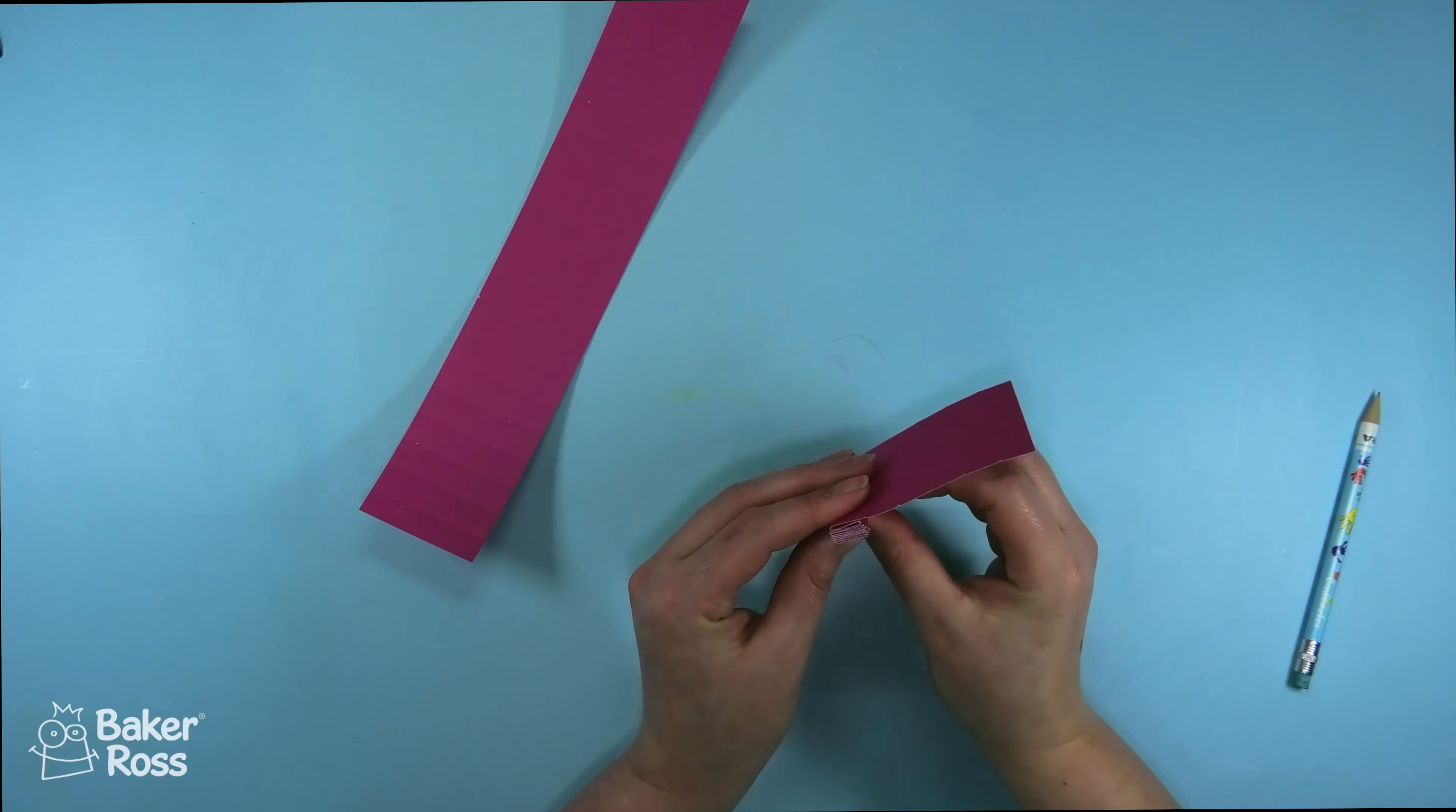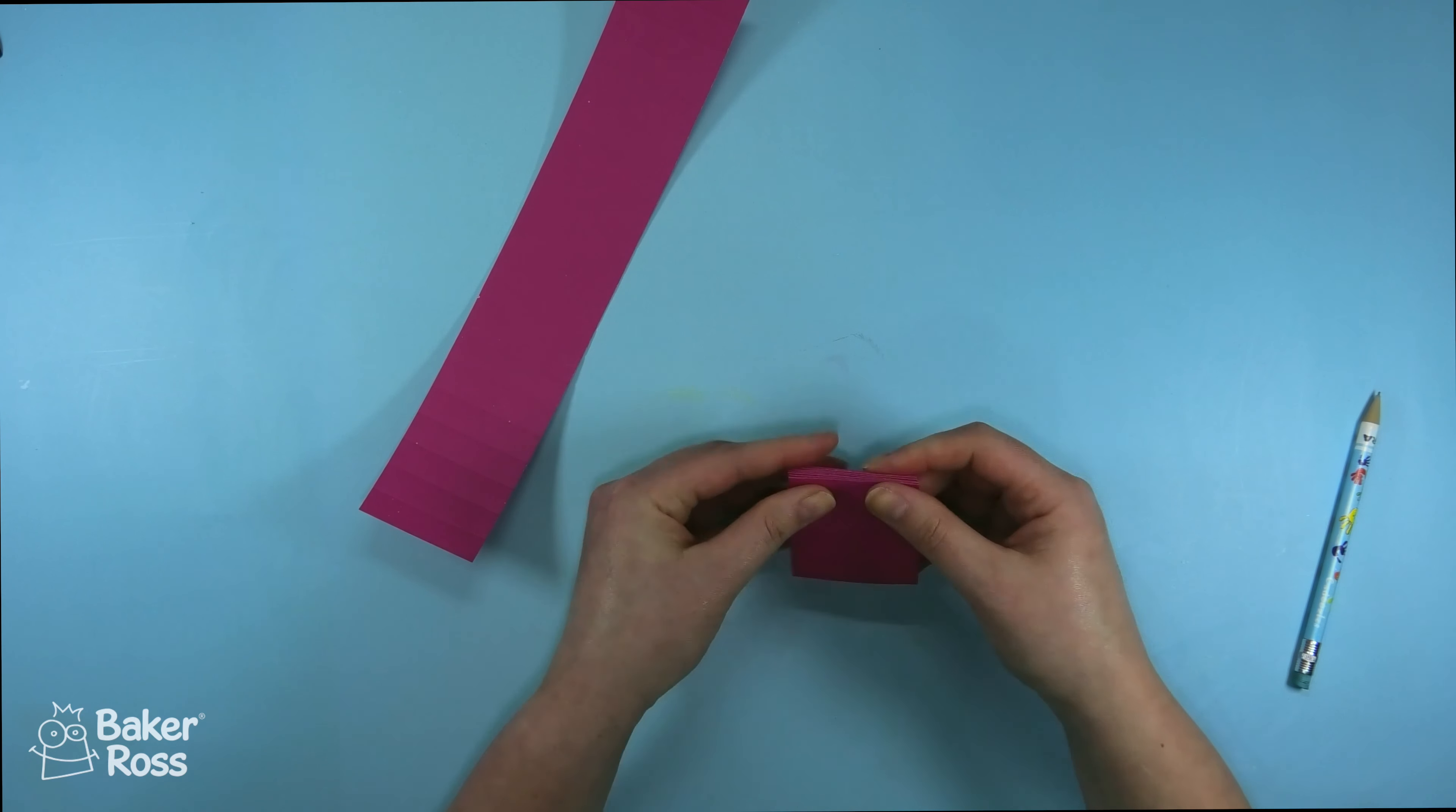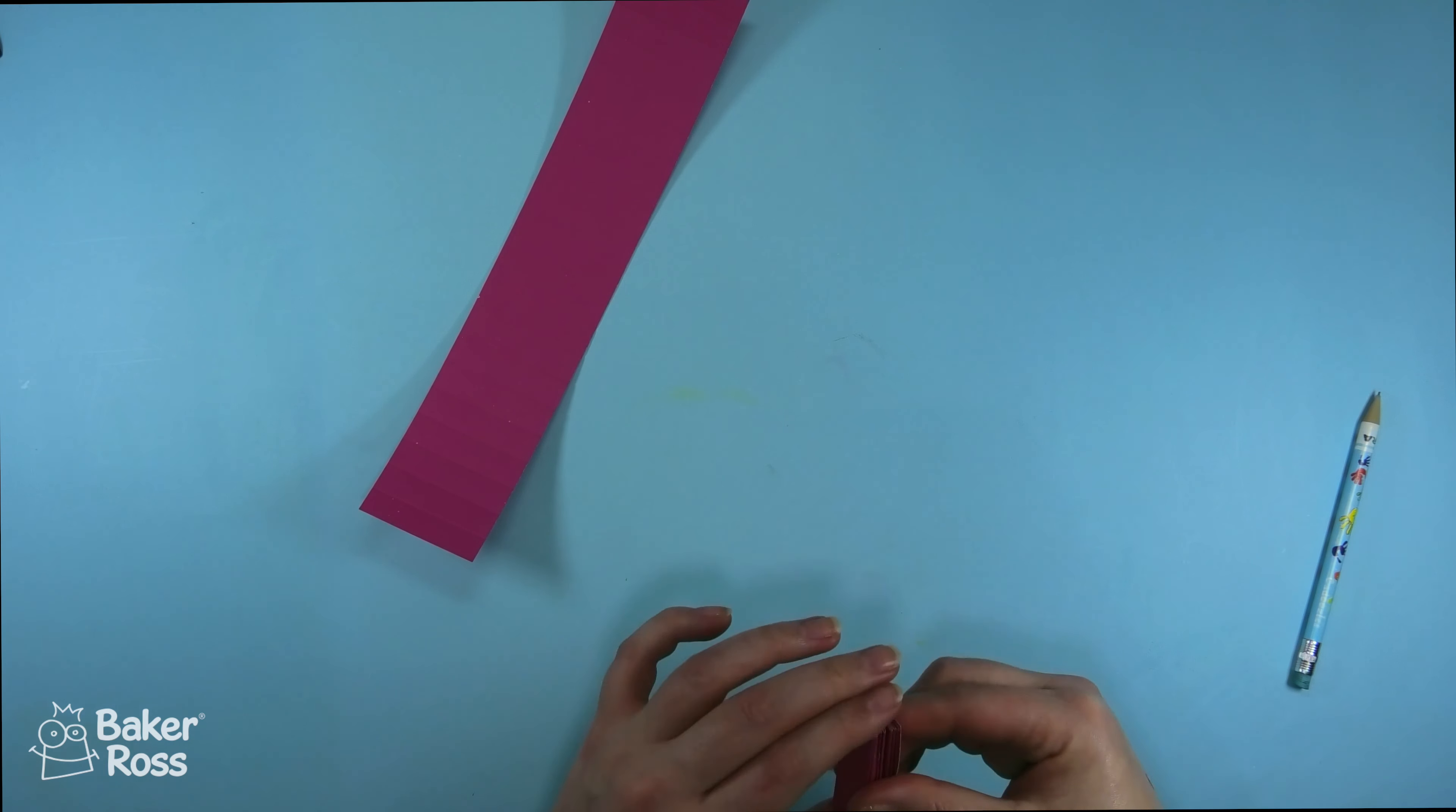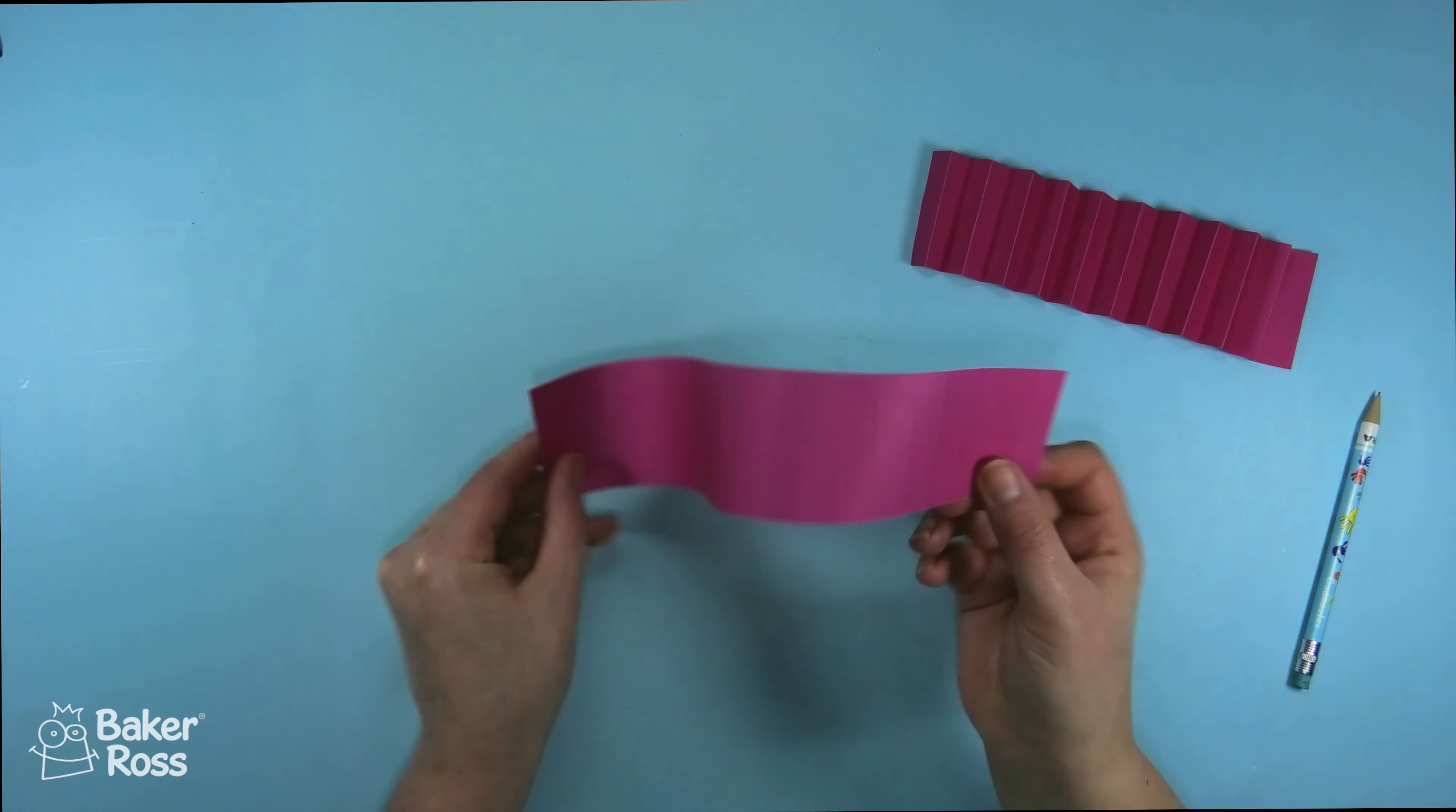You'll want to fold both of the pieces backwards and forwards until you completely run out of paper. You'll want it to be nice and even so you may need to just snip off some of the excess at the end and I'll go ahead and fast forward through me folding that second piece.